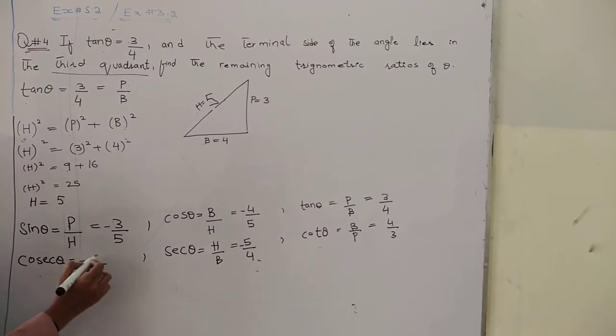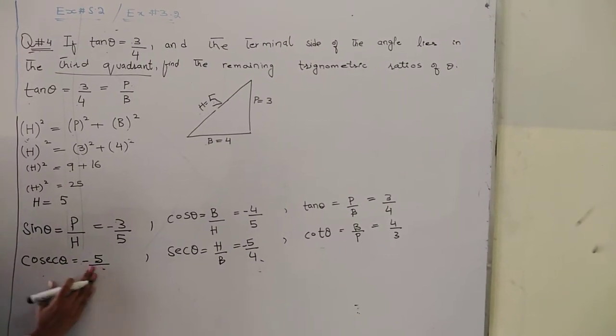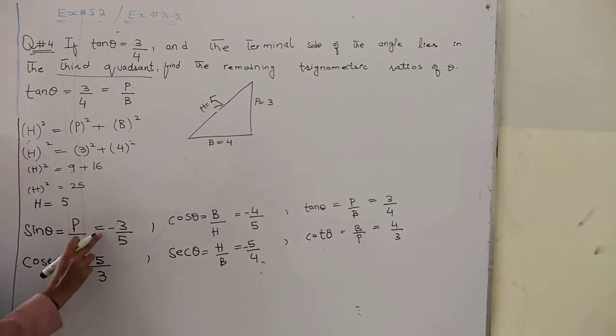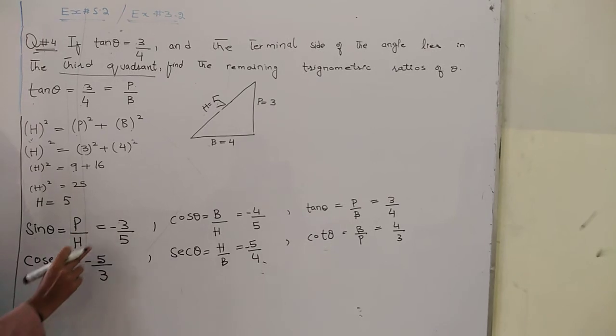Sine is perpendicular over hypotenuse, which is 3 over 5. But since the angle is in the third quadrant, this one is negative. I put it as negative.